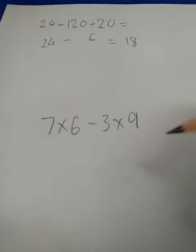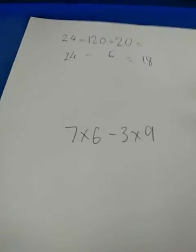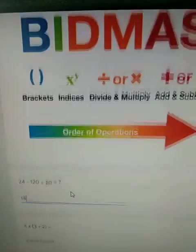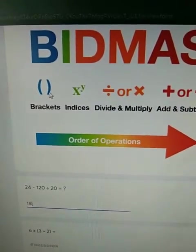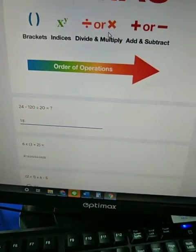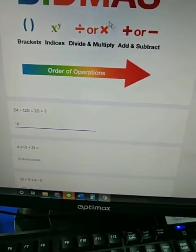Let's do 7 times 6 minus 3 times 9. So again we start thinking about our BIDMAS. If you'd like you can just scroll up to here to remind yourself the order. We don't have any brackets. No. Indices. Nope. Multiplication or division. Yes.